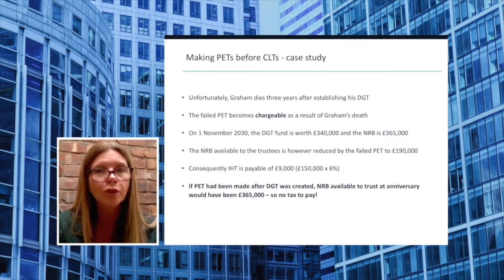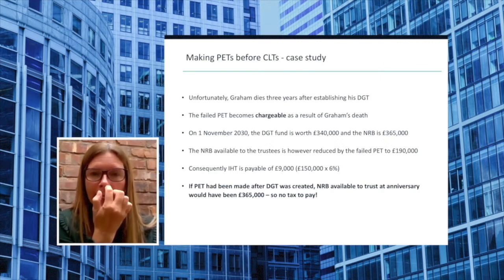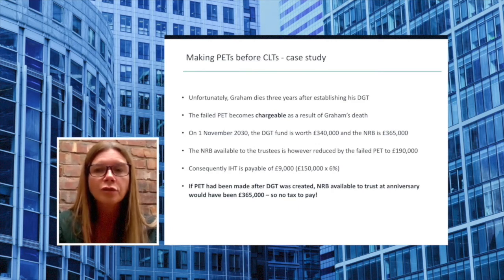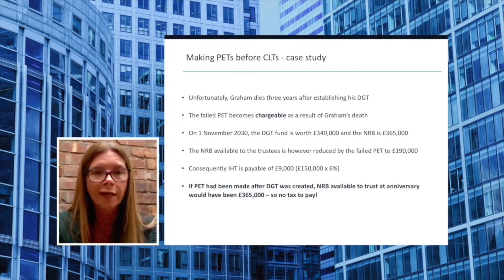When we now look back to see whether Graham made any chargeable transfers in the seven years before he created the DGT, we find the PET which has failed to achieve exempt status and so has become chargeable retrospectively. The nil rate band available to the trustees must therefore be reduced by the value of the failed PET from £365,000 to £190,000, and a periodic charge of £9,000 will therefore arise.